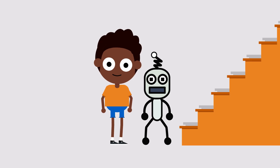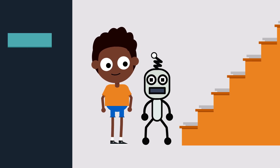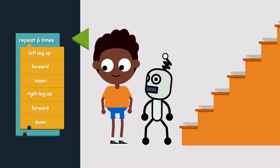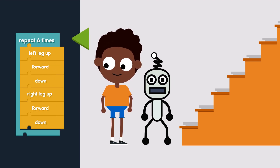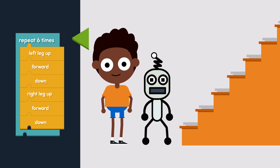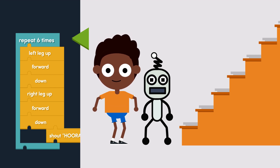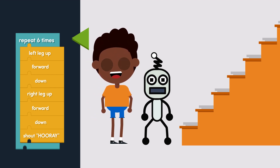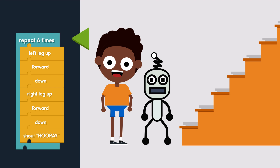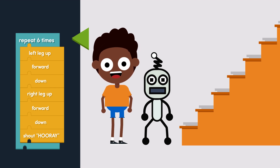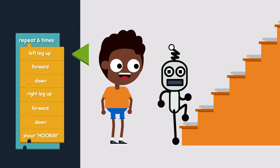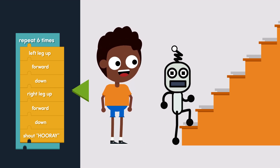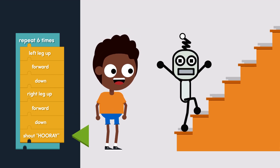So let's return to our robot climbing the stairs. We got the steps in a loop and soon it's on its way. But let's add other stuff in the loop for fun today — how about we get the robot to shout 'Hooray!'? Let's run the loop and see what happens. Left leg up, forward, down. Right leg up, forward, down. Hooray!